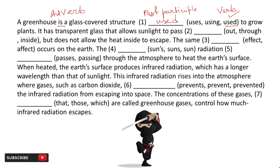Next blank: 'It has transparent glass that allows sunlight to pass [blank].' The three options are: out, through, inside. Pass is such a word where you use 'pass out', 'pass through', or 'pass inside'. Sunlight cannot pass out — 'out' means something exits completely and is no longer inside. 'Inside' means something comes from outside and gets stuck. But here the light is passing through, so 'through' is the appropriate word. In physics too, transparent glass allows light to pass through it.